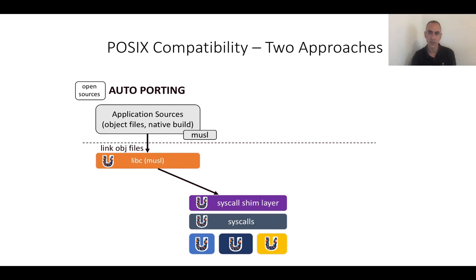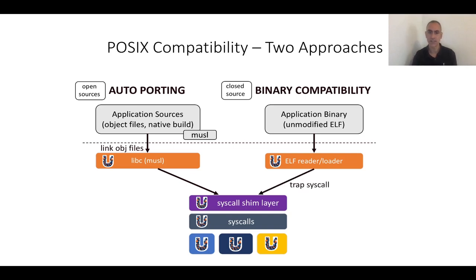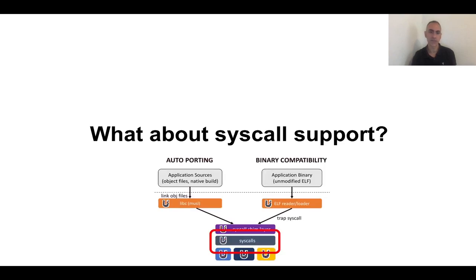The second approach is called binary compatibility. Here we don't assume we have access to the sources. We begin by taking an application binary — some unmodified ELF. We have an ELF reader and loader module in Unikraft, and then we trap the syscalls and redirect them again to the syscall shim layer. Crucially, what matters is how much syscall support you have, because that directly translates to how many applications you can support.